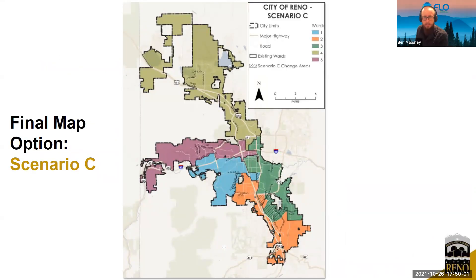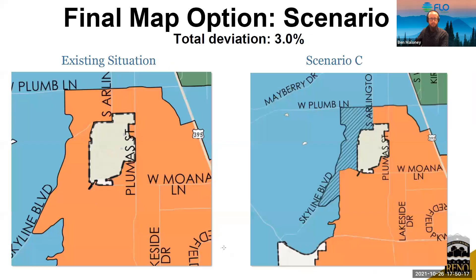Scenario C has the least amount of changes. Looking at Skyline and the area to the northwest of the golf course: this shifts from Ward 2 to Ward 1 to help balance the population growth that's been happening in Ward 2 and add some population to Ward 1.